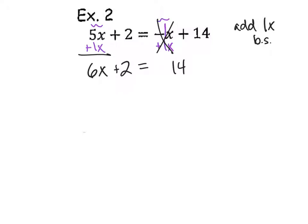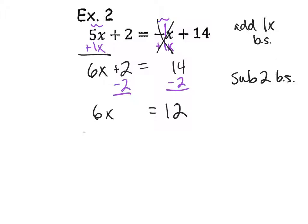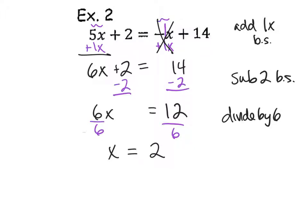Subtract 2 from both sides. Let's get the 2 and the 14 together — they are both constants, both numbers just all by themselves. 14 take away 2 is 12. So I subtract 2 from both sides. Then divide by 6. X is now alone. 6 goes into 12 evenly — x equals 2.